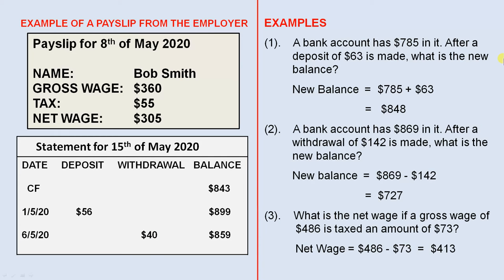Here are some simple examples. Number 1: A bank account has $785 in it. After a deposit of $63 is made, what is the new balance? A deposit means you add that money to the existing balance. So $785 plus $63 equals $848, and that's the new balance.